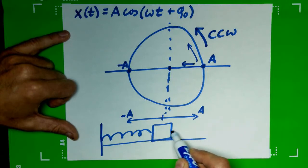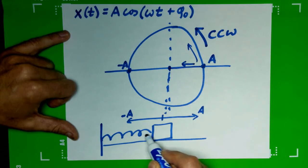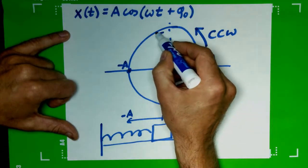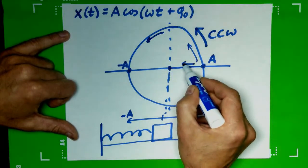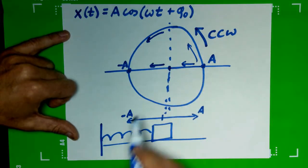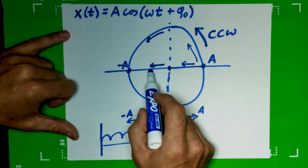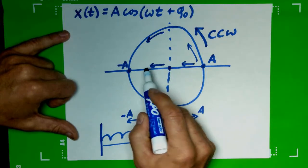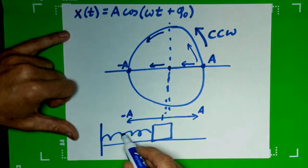Once it gets to zero, it's going to overshoot and keep going. So as it continues to go, now our displacement is in the negative and growing in the negative direction. And then it's going to get all the way compressed,